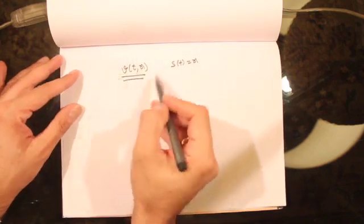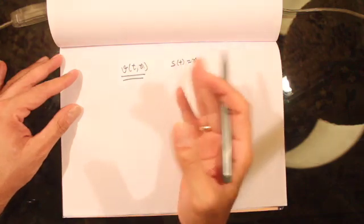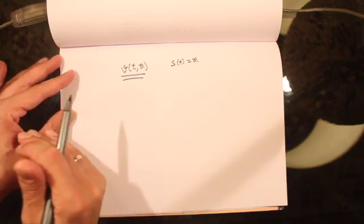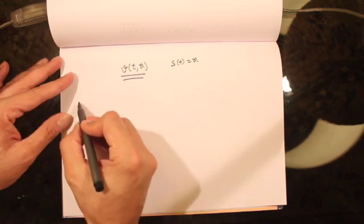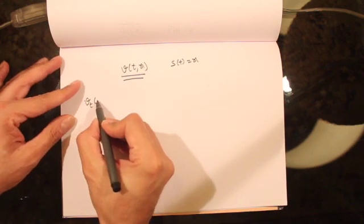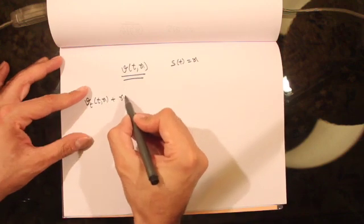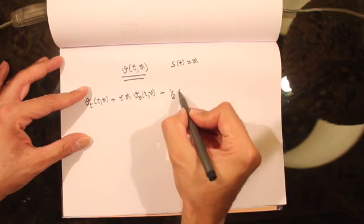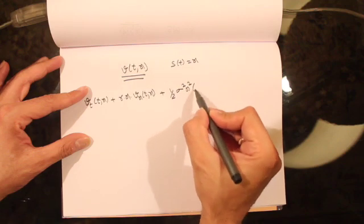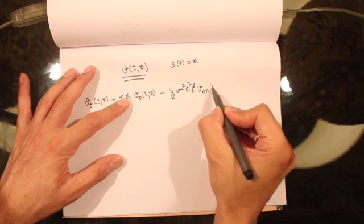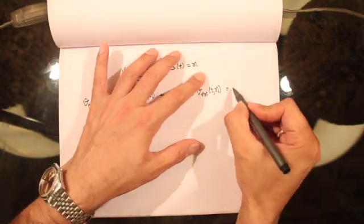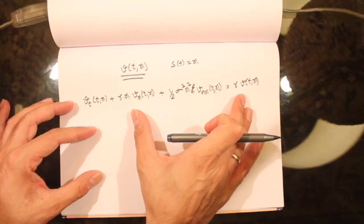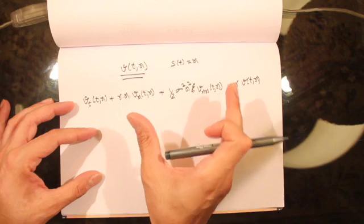What I want to show you today is that the price of an up-and-out call option satisfies the Black-Scholes differential equation. The Black-Scholes differential equation, which we derived many lectures back for a European call option, is given by: v_t(t, x) + r·x·v_x(t, x) + (1/2)·σ²·x²·v_xx(t, x) = r·v(t, x).